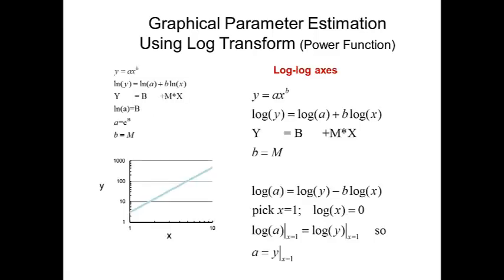We've seen one way to apply that. If we have a table of data of x and y, we can take the natural log of x and the natural log of y, plot that up on Cartesian axes, get the slope and the intercept, and use that to determine the coefficients a and b.